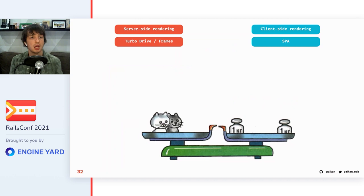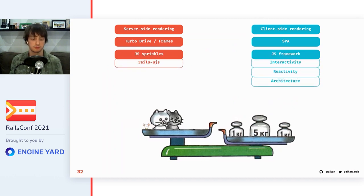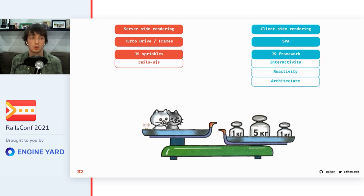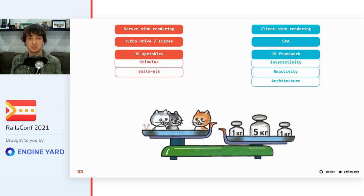On the frontend side we have frameworks, and they bring a lot: interactivity, reactivity, architecture patterns, concepts, and conventions. But when we use an HTML-first approach, we can only use JavaScript sprinkles to vitalize our HTML — like the already-mentioned unobtrusive JavaScript. But that's very simple and provides limited functionality. We need something else, and we have it: its name is Stimulus.